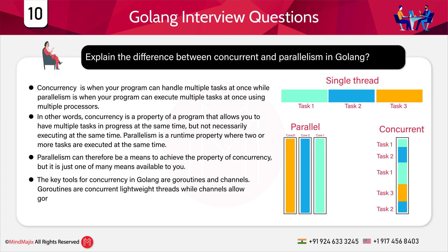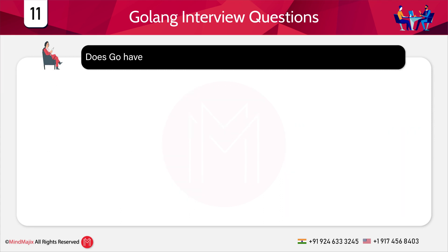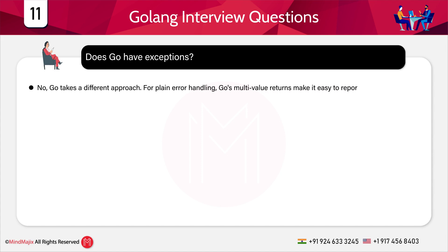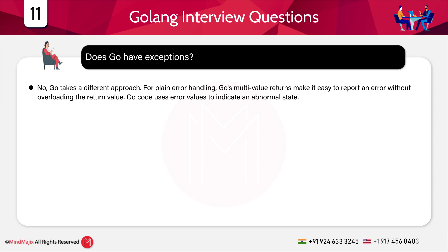Does Go have exceptions? No. Go takes a different approach to error handling. Go's multi-value return makes it easy to report an error without overloading the return value. Go code uses error values to indicate an abnormal state. Instead of catch and throw, we use an if statement: if err != nil — that is how errors are handled in Golang.